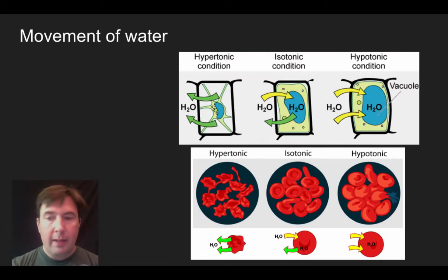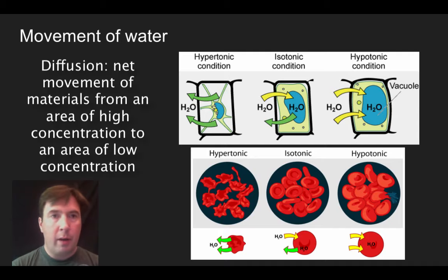So one of the things that we talk about is the movement of materials in and out. And we're going to use water as our example of how things get in and out. The movement of water is a special type of diffusion known as osmosis. So osmosis is going to specifically refer to water, but let's break it down into the different components.